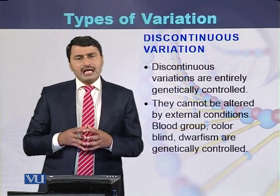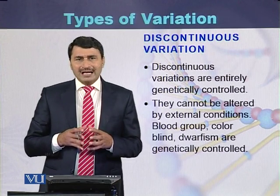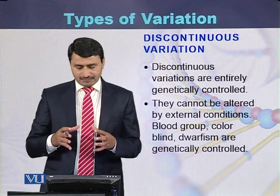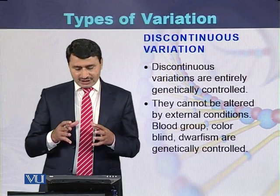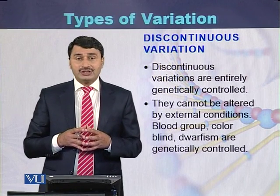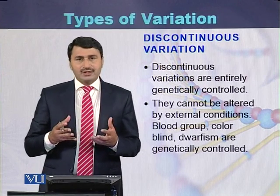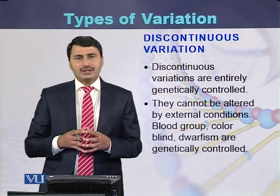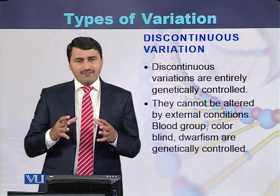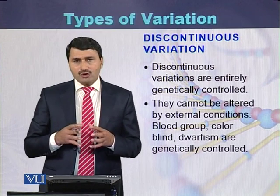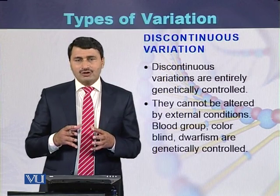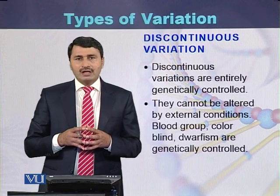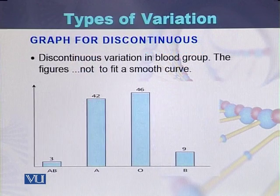Discontinuous variation is entirely controlled by the genetic makeup or by the genes of that species or organism. These kinds of variations cannot be changed by external factors. Examples include blood group, color blindness, and dwarfism in humans — variations purely controlled by the genetic makeup and not by environmental factors.